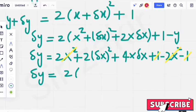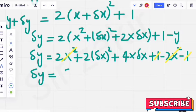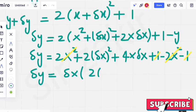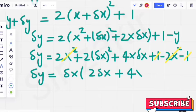We can take delta x common from these two. By taking delta x common, what will be here? 2 delta x it will be. 2 delta x plus 4x.